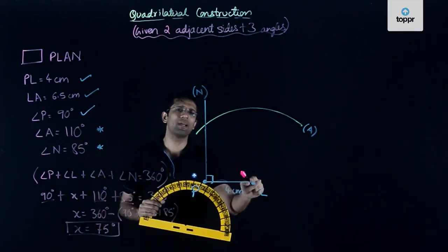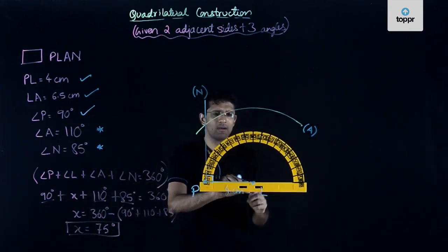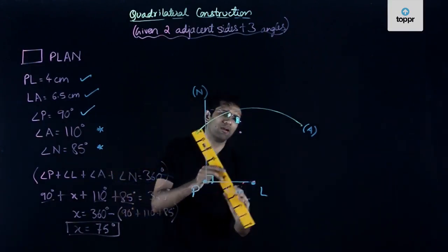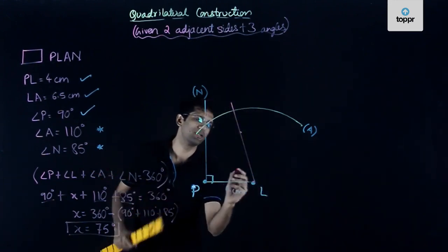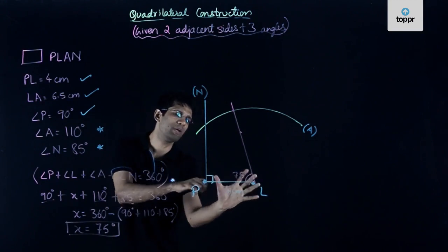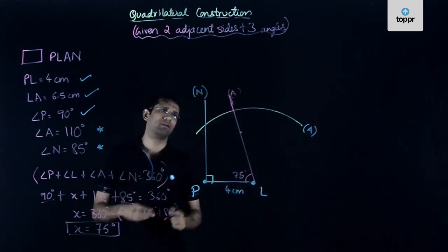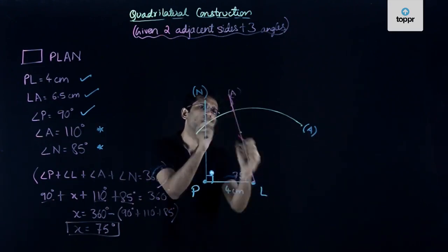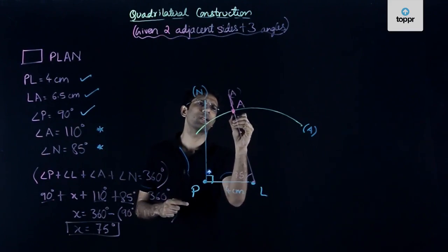Now that I know the measure of angle L as 75 degrees, I take my protractor, place it carefully at point L, and draw an angle measuring 75 degrees. I locate the point where this segment is at an angle of 75 degrees to the base PL and label it. Having drawn this side at 75 degrees to PL, point A lies somewhere on this line. But I also know point A lies on the arc, so A is at the intersection of this line and the arc.